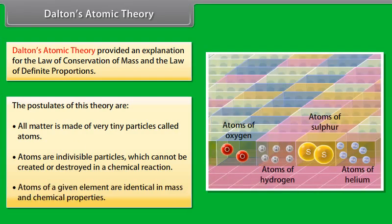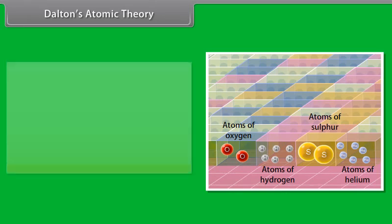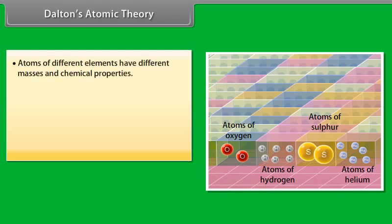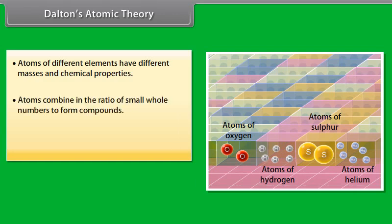The postulates of this theory are: 1. All matter is made of very tiny particles called atoms. 2. Atoms are indivisible particles which cannot be created or destroyed in a chemical reaction.